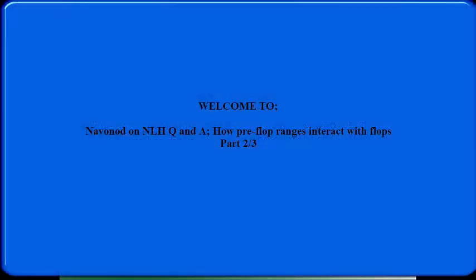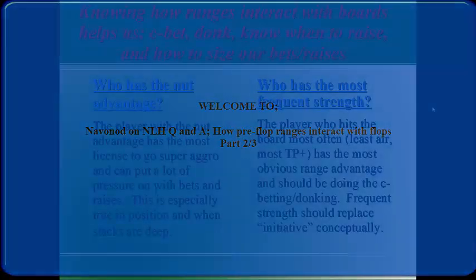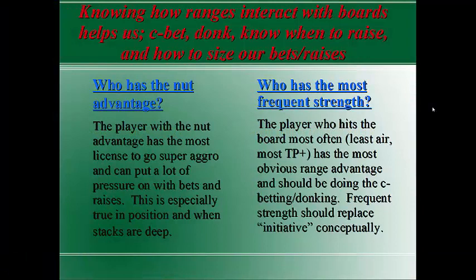Understanding the way ranges interact with flop textures is what this is all about. It's going to tell you when to donk lead, when to check, when to raise monster hands for value, how to balance that with bluffs, and how to size those bets and raises. Establishing who has range advantage tells you who ought to take the lead. In GTO terms, there are two main ways to look at range advantage: who has the nut advantage, and who has the most frequent strength.